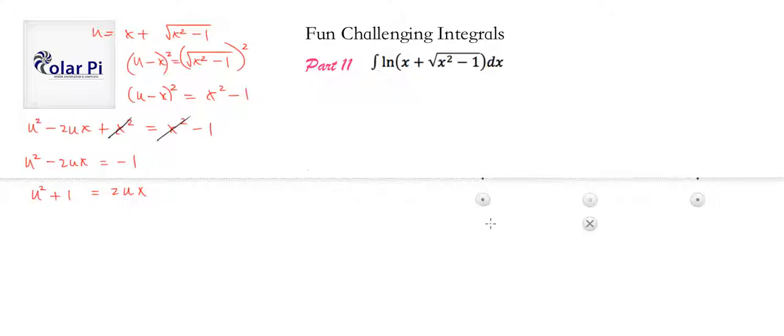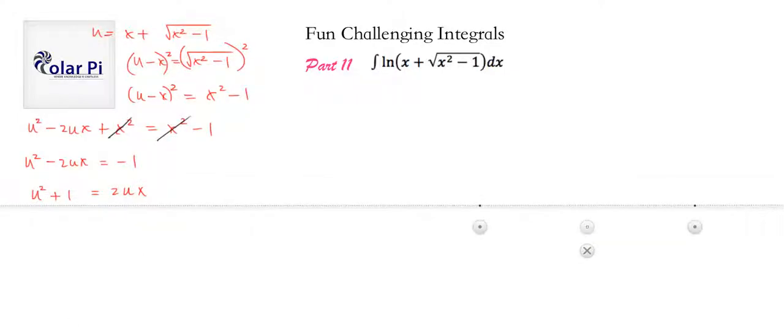U squared minus 2x equals negative one. Now, add one to both sides, and add this quantity to both sides as well. And you're going to get the following: u squared plus one is equal to 2ux. If you did what I said to do. Okay, cool. So, we know what we're doing next. That allows us to get x, which is this, right? Because I can cross out right there.